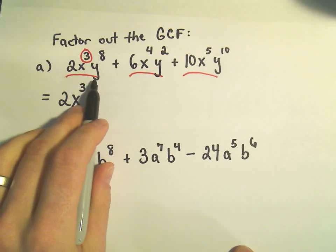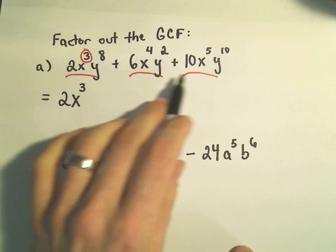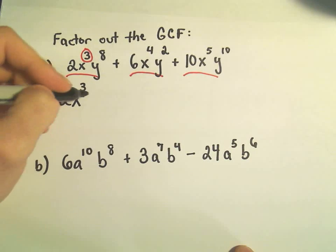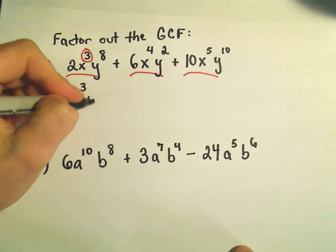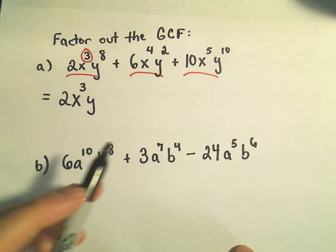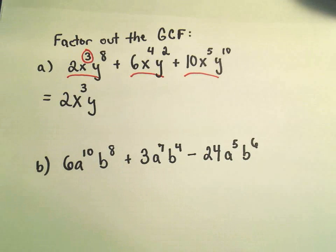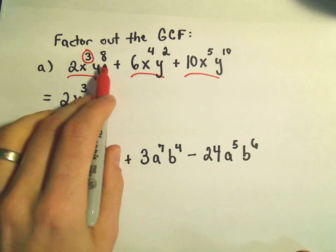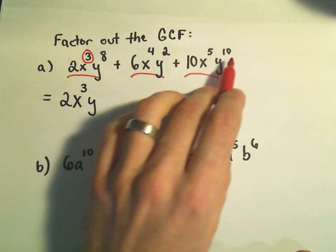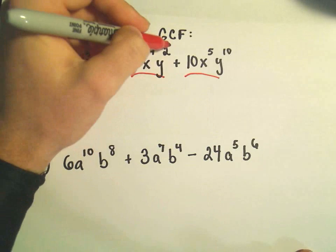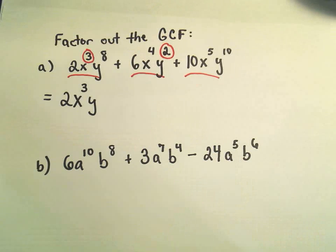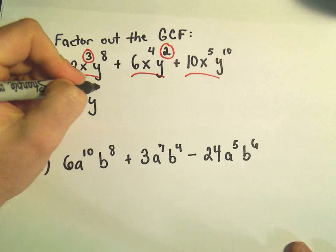Likewise, we have a y in all three terms, so I'm going to pull out a y. I look at the exponents: there's an 8, a 2, and a 10. The smallest exponent is a 2, so I'm going to factor out y squared.